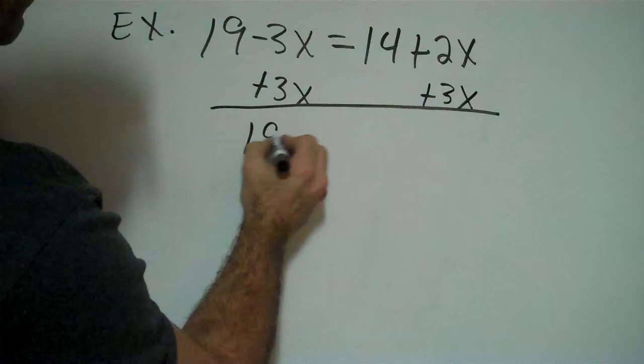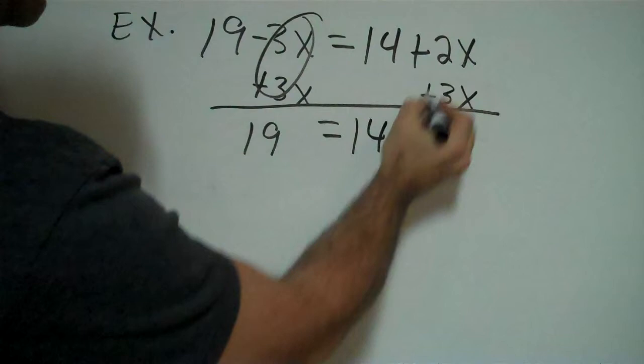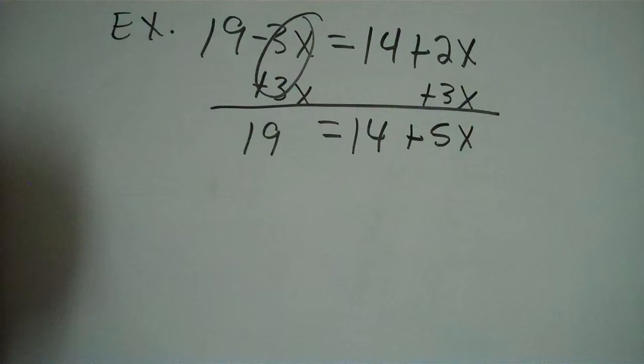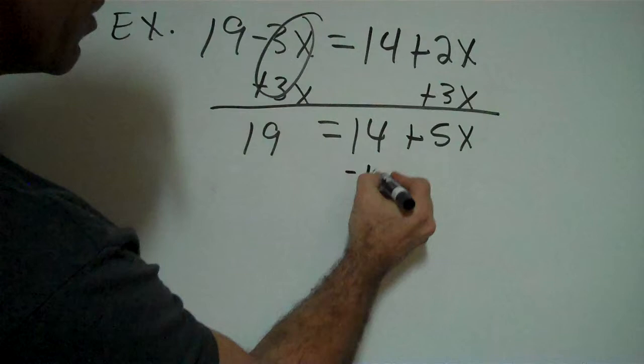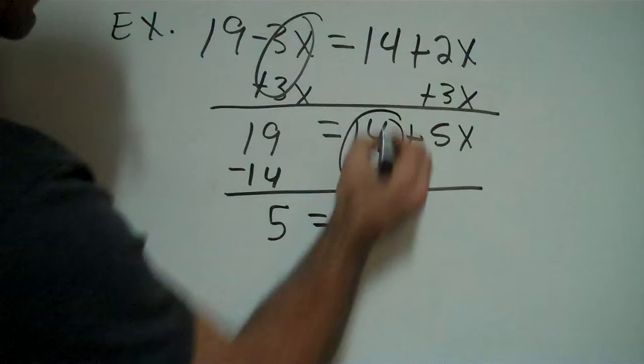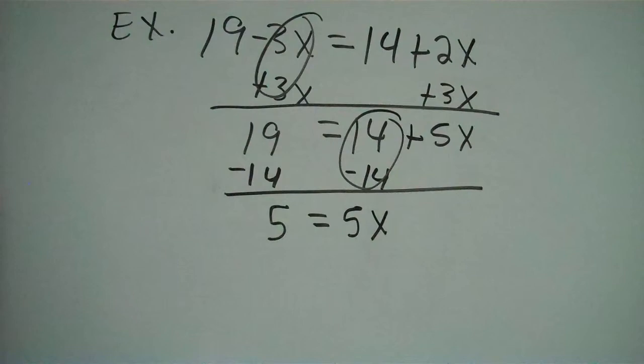Now notice I get my 19. That zeroes out, so that gives me an equals 14. And then 2x's and 3x's give me 5x's. Notice how I lined up those x's, because remember, x's can only add or subtract from other x's. Now I need to get the 5x by itself. So I'm going to move that 14 by adding a negative 14 to both sides. So 19 and negative 14 give me 5 equal to, and 14 and negative 14 zero out. So all that's left is a 5x.